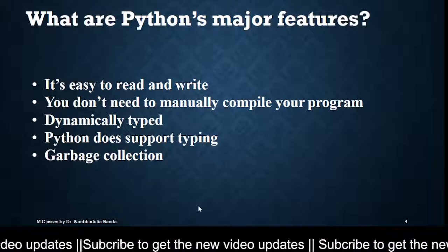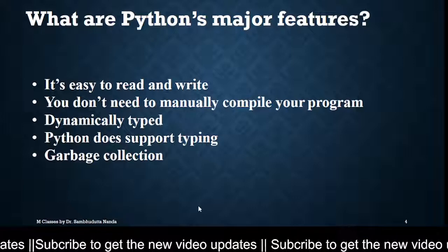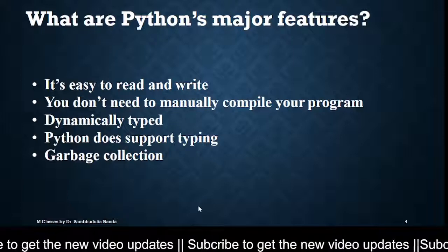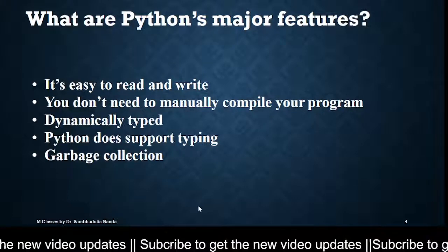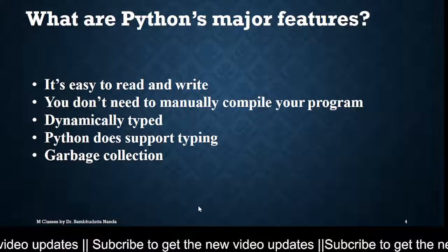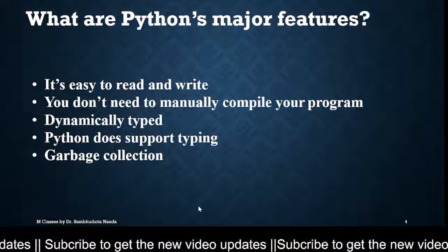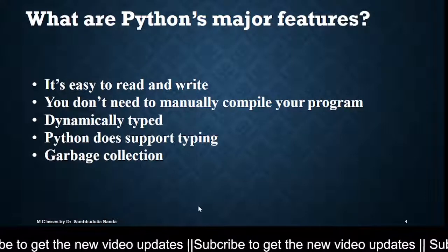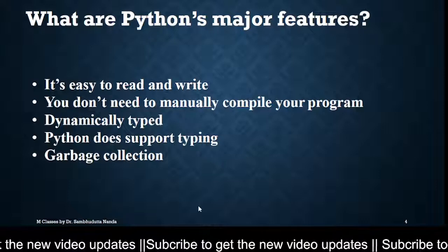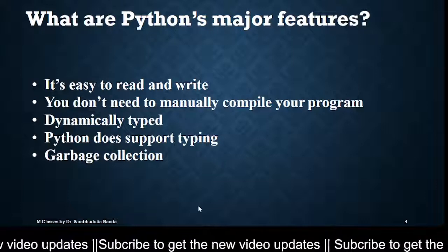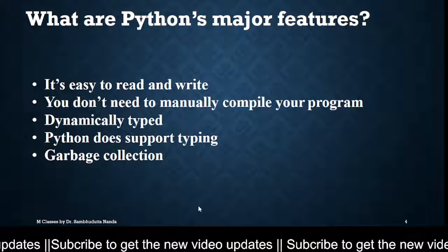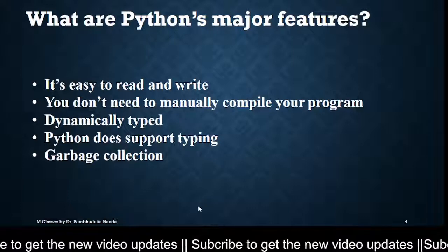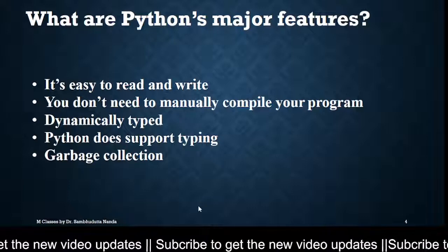And garbage collection — this is a very important factor of Python and why it is majorly used. When a program is running, it creates many temporary variables used throughout the programming. When the program ends and the task is completed, those temporary variables stay in your system, taking up cache memory and system memory, wasting some memory. Those are called garbage values. In other languages you need to delete them manually. But in Python, it does it automatically — whenever the program is executed and completed, it deletes all the temporary values or variables created.